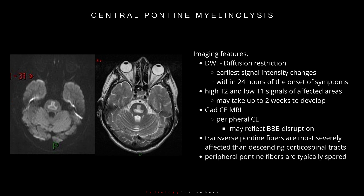When considering imaging features, diffusion-weighted images show the earliest signal intensity changes as restricted diffusion within 24 hours of the onset of symptoms. This region subsequently demonstrates high T2 and low T1 signals, and the T1 and T2 changes may take up to two weeks to develop.